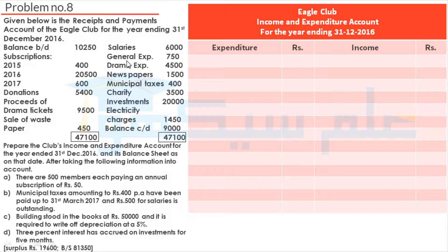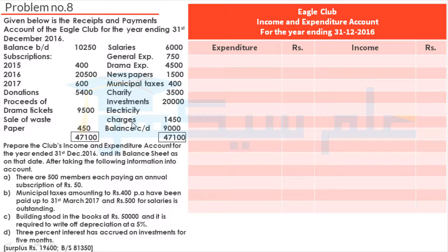Salaries Rs. 6,000. General expenses Rs. 750. Drama expenses Rs. 4,500. Newspapers Rs. 1,500. Municipal taxes Rs. 400. Charity Rs. 3,500. Investments Rs. 20,000. Electricity charges Rs. 1,450. Balance carried down Rs. 9,000.